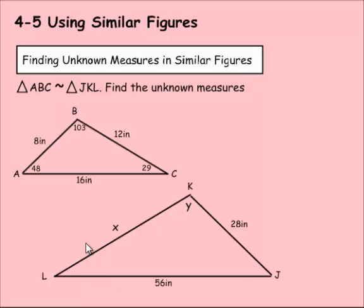If that confuses you at all, you can number your angles, and sometimes that helps people. Because the order that they tell you the triangle is very important. A comes first, followed by B, followed by C. J, K, and L in that order as well.